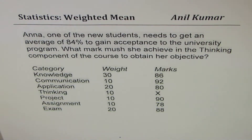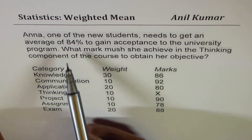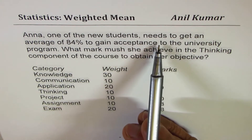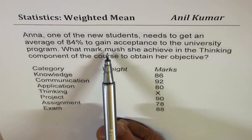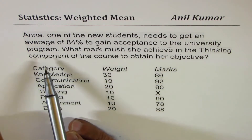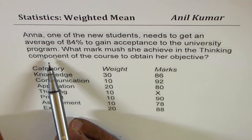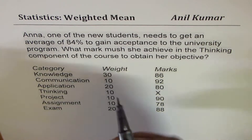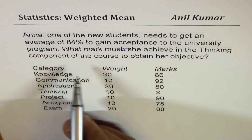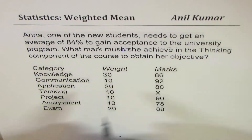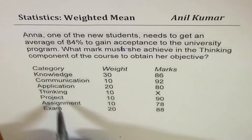I'm Anil Kumar sharing with you a test question based on weighted means. Anna, one of the new students, needs to get an average of 84% to gain acceptance to the university program. What mark must she achieve in the thinking component of the course to obtain her objective?